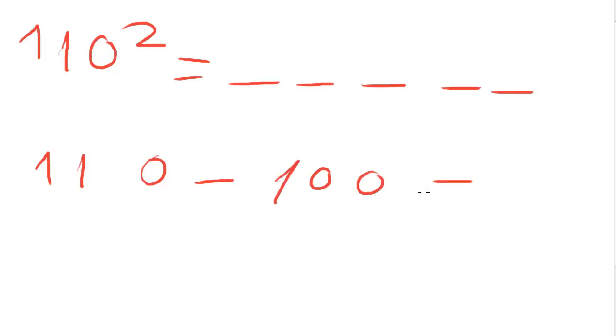Now, calculate one hundred ten square. Again, five digits. Make the difference between one hundred ten and one hundred. The difference is ten.